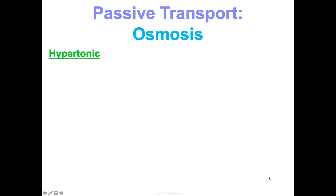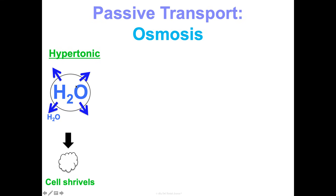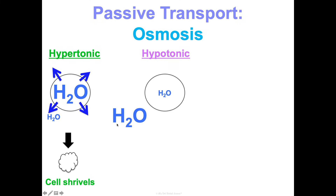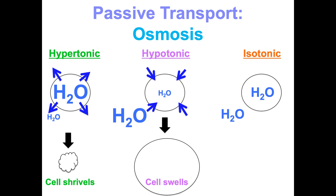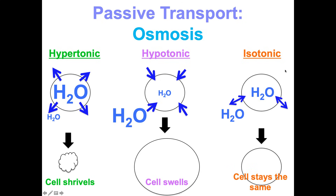Let's summarize that visually. Hypertonic: less water outside, more water inside, so water rushes out and the cell shrivels up. Hypotonic: more water outside than inside, so water rushes in and the cell swells up. Isotonic: the same in and out, so water moves in and out equally and the cell stays the same size.